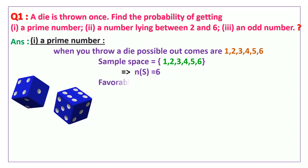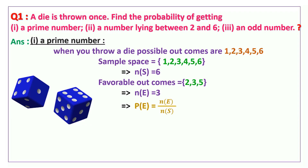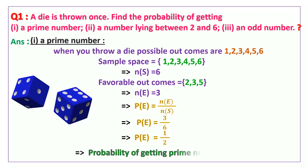Now the event is getting a prime number. The favorable outcomes are 2, 3, 5. Therefore n of e is equal to 3. Now the probability of an event p of e is equal to n of e by n of s, which implies p of e is equal to 3 by 6, which is equal to 1 by 2. So the probability of getting a prime number on the top face is 1 by 2.